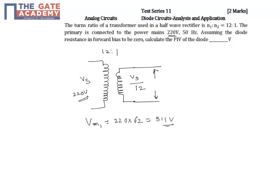What about Vm2, the secondary side peak voltage? This is nothing but 1/12 of Vm1, so this equals 1/12 of 311, which equals 25.9 volts.